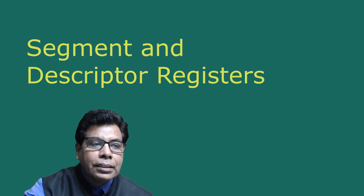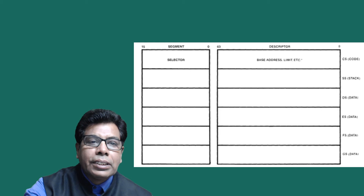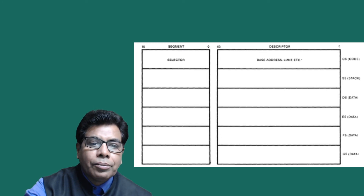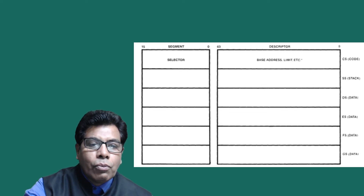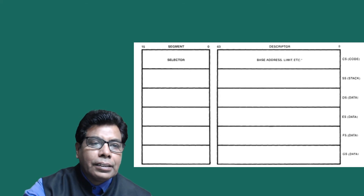Now let us go to the segment and descriptor registers. To make logical addressing efficient, the 80386 provides 6 segment and descriptor registers as shown in the figure. We have CS (code segment) and SS (stack segment). DS is also used for data, and then FS and GS, which are two additional segments used for data. In total, we have four segments for data, one for code, and one for the stack. The descriptor will have the base address, limit, and other parameters for protection.